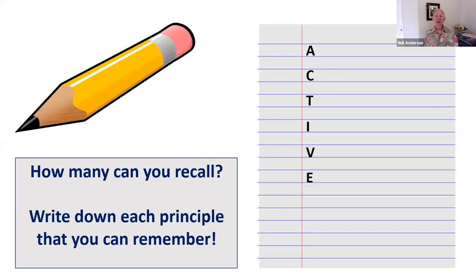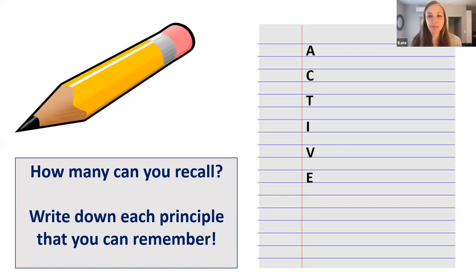How did you do? Can you write the six verbs and the phrases that go with those verbs? Write down each of the principles that you can remember. Here's the part where you need your piece of paper and your pencil or pen. We just heard all about the active framework — can you recall what each principle is that starts with each corresponding letter? For this part, you don't have to write in the chat box. Just test your own recollection, your own understanding of the active framework. Take a moment — we'll give you 30 seconds to a minute.